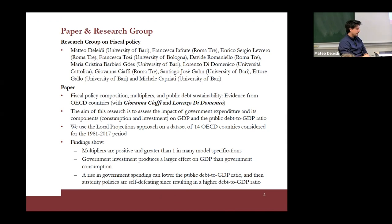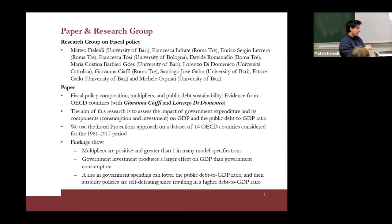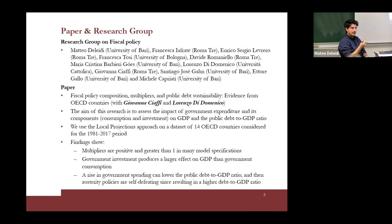This paper is part of a broad and larger research carried out on fiscal policy among several Italian universities, for instance Roma 3, University of Bologna, University of Bari. The aim of this paper is to assess the impact of government expenditure in its components, namely public consumption and public investment, on GDP and on the public debt-to-GDP ratio. To do so, we use the local projection approach — empirical methods on a dataset of 14 OECD countries for the 1981–2017 period.